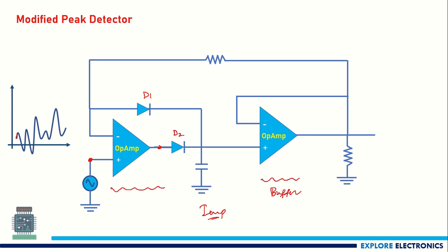Since this terminal has a positive voltage, diode D2 conducts — D2 is forward biased. This makes the capacitor charge to the first peak, say 1 volt. Now 1 volt is the input voltage applied to the second stage of the circuit, which is again a buffer or voltage follower, so the output of this second stage is also 1 volt.